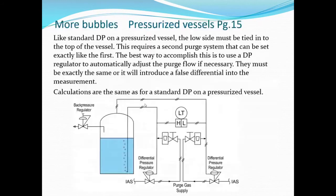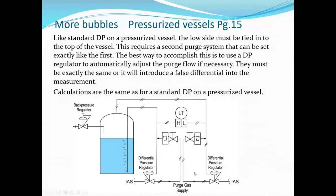For a pressurized vessel with a bubbler, we basically have to double our equipment — just as with other pressurized applications, we connect the low side to the vessel. This means double regulators, double isolation valves, double rotameters, etc. Both sides must be set up exactly the same; if they're not, you'll get false readings.